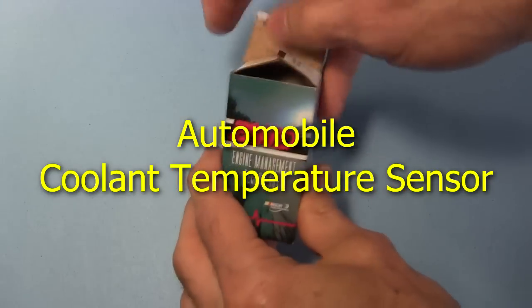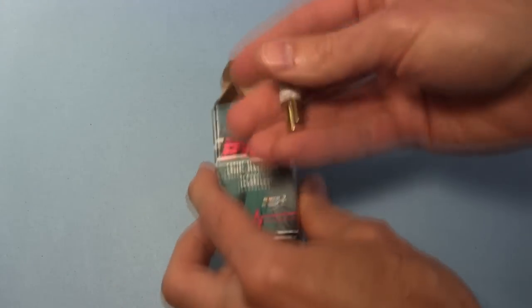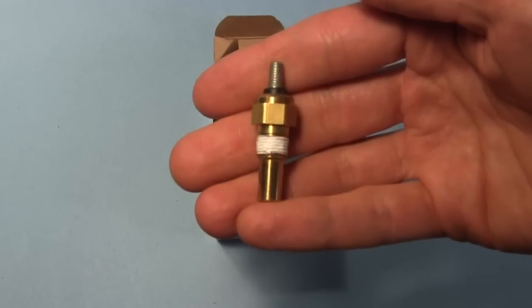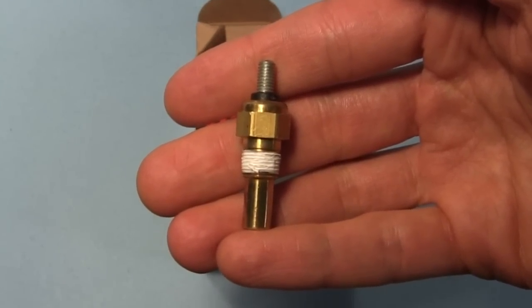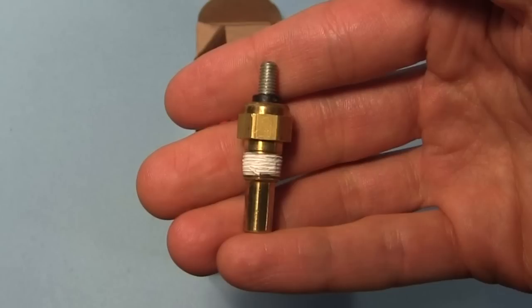I couldn't find a thermistor locally, but some quick research turned up that automobile coolant temperature sensors are just thermistors in a protective case. Which was a good thing, since that saved me having to make a case of my own. With this one, there's only one obvious place to connect to, this threaded part.